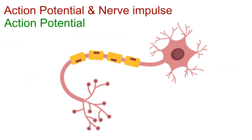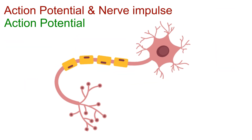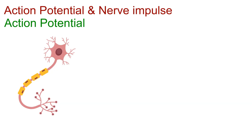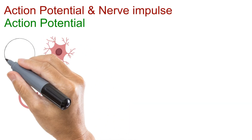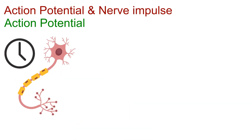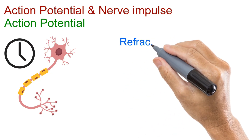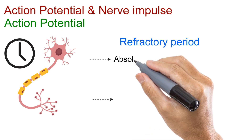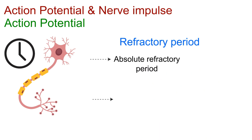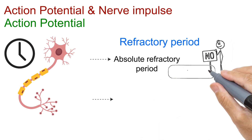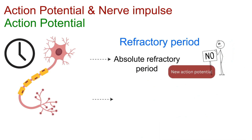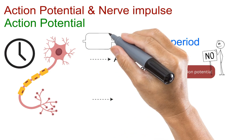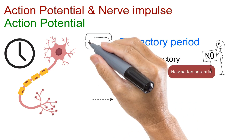After an action potential has occurred, the neuron needs a brief recovery time before it can fire again. This recovery time is known as the refractory period, and it comes in two types. The first is the absolute refractory period. During this phase, no new action potential can be generated, no matter how strong the stimulus is. This happens because the sodium channels are temporarily inactive.